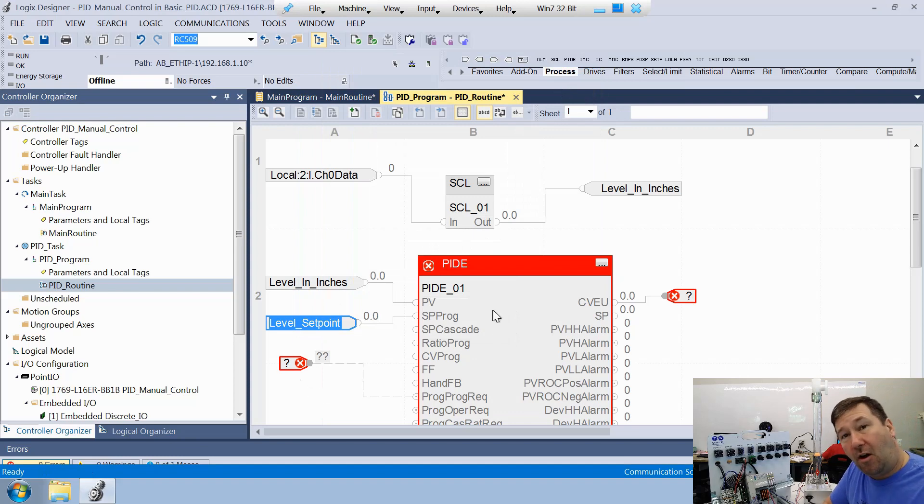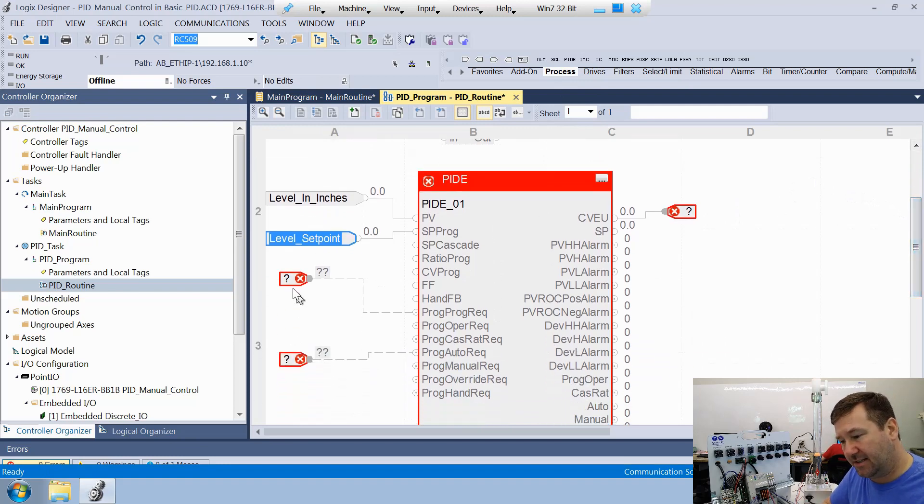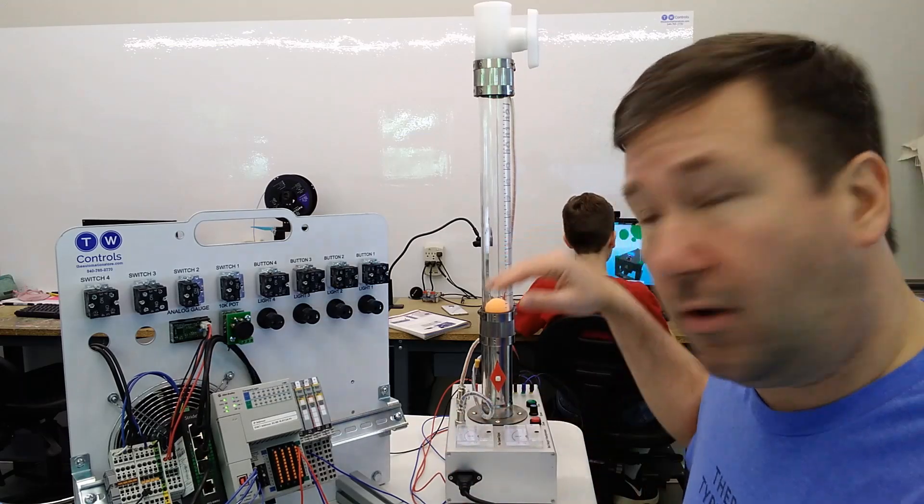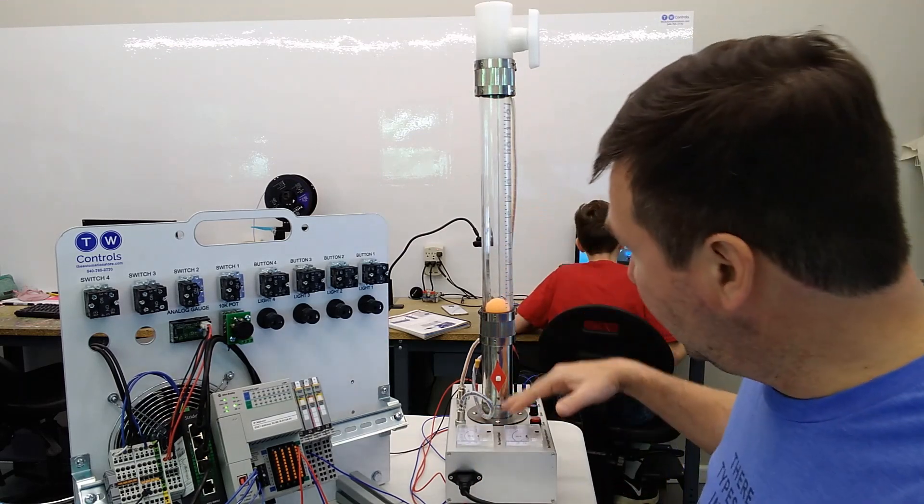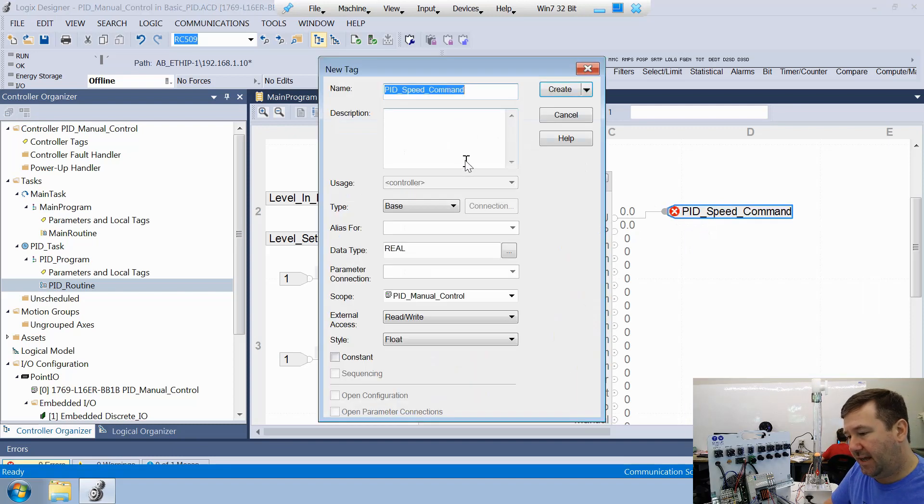And then we'll create a new one and it'll be a real. And then we don't always have to actually use tags in these. That's one reason I'm bringing these down for now. We're going to actually use these to do some things in later videos. But for now, we're just going to put a one on our prog prog request and on our prog auto request. And then we have our CVEU, which is our control variable or what we're going to try to use to force that level where we want it. So that's going to be our fan speed here. And we're going to use a tag for this. We're going to call it PID speed command. And we'll create a new variable for that. It'll be a real.